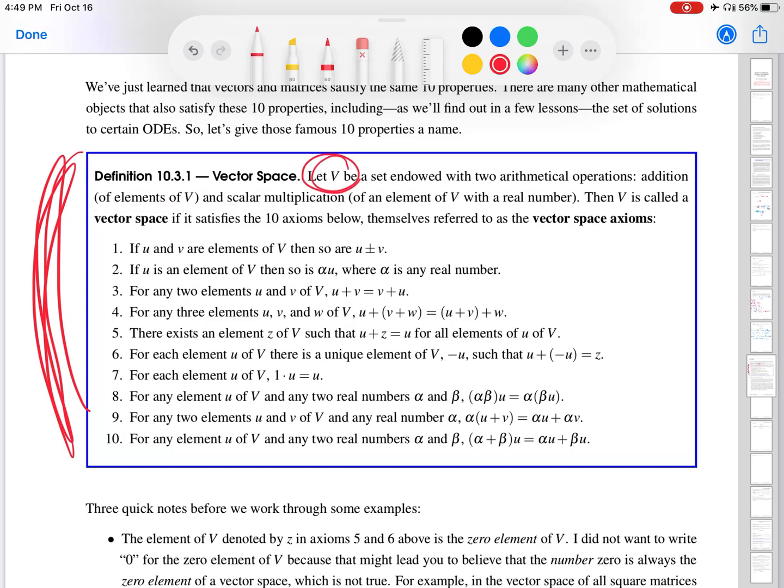Think of it as your kitchen cupboard, and then there are two ways you can combine things in your kitchen. You can add stuff and you can multiply stuff, scalar multiplication. So let's read on. What else does it say? V is called a vector space if it satisfies the 10 axioms below, which we call the vector space axioms.